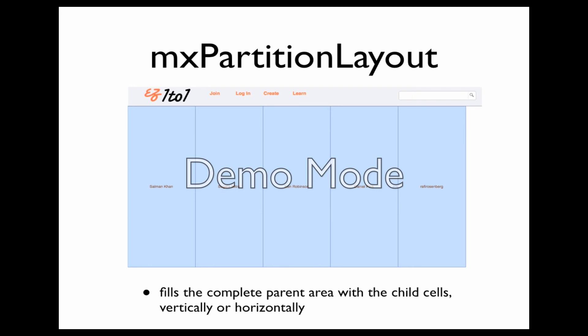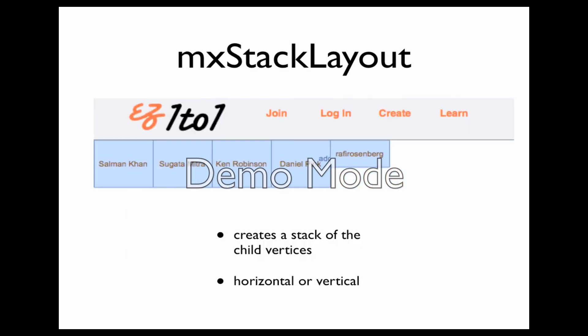We move on to the partition layout, in which you basically fill the entire parent area with all of the child cells. The example shown here is where it's filled vertically, but it can also be flipped on its side and filled horizontally. Now we have the stack layout, where we can have either a vertical or horizontal stack of all of the vertices.